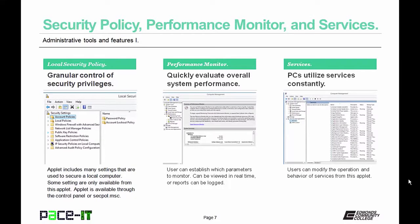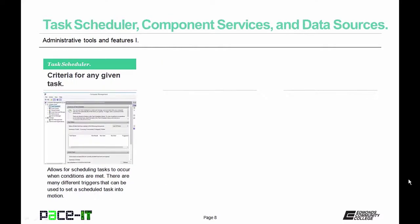PCs utilize services constantly. From the Services panel, users can modify the operation and behavior of services — you can shut them down, start them, and so forth. Task Scheduler allows the user to schedule tasks to occur when certain conditions are met — there are many different triggers, and once criteria are met, the task happens. Component Services allow the user to make adjustments to COM objects; it's available in Windows XP and 7 from Administrative Tools, but in Vista you need to add it as a snap-in to the Microsoft Management Console.